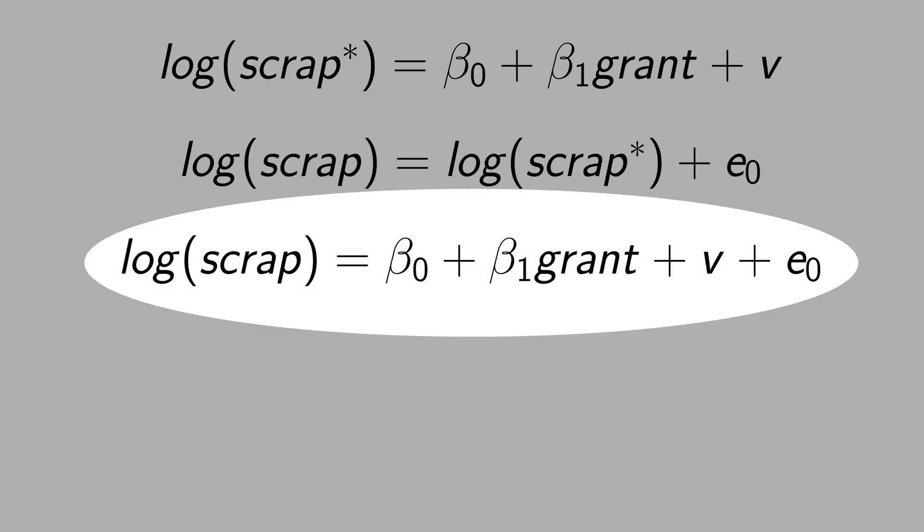In this regression here, the error term is not only v. It's the v plus the measurement error.